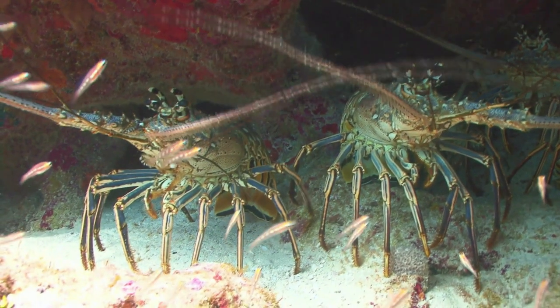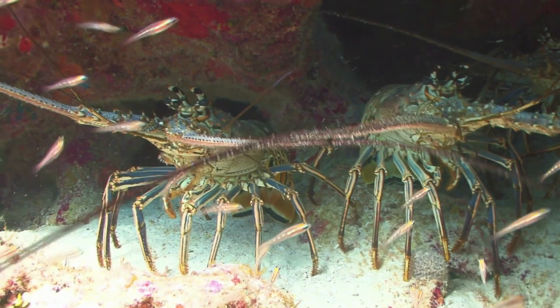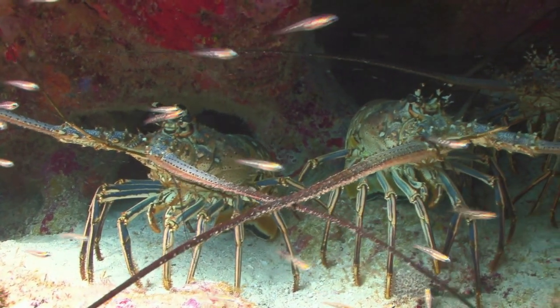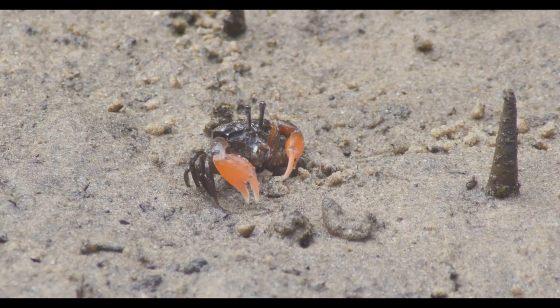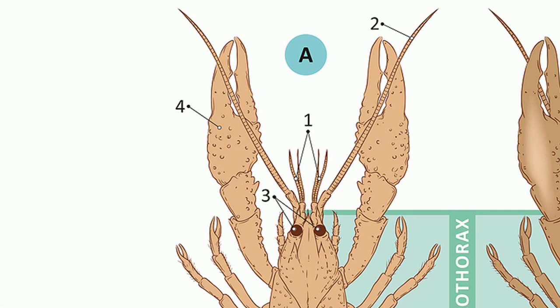Now, let's get back to crustaceans. Most crustaceans live in water, but some live on land. In addition to the traits that all arthropods have, Crustacea also have a head with two compound eyes, two pairs of antennae, and three pairs of mouth parts.